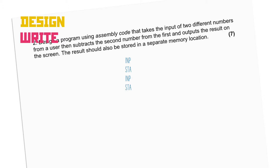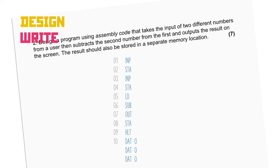With that done, we'll need to get the first value back into the accumulator, so a LOAD would be next. We then do the subtraction, then output it to the screen, and then store the result in memory. The order of those last two steps doesn't really matter, but that's the order they were asked in the question. With the program itself done, we'll HALT it, which then lets us put in our DAT instructions. We need a place to store both input numbers and the result — if we're doing placeholders, the normal thing is to use DAT 0, literally storing zero in memory.